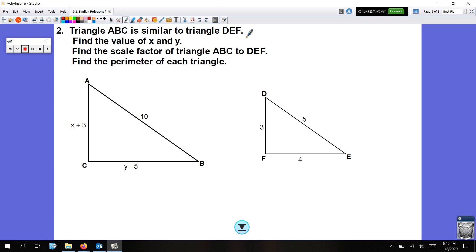Triangle ABC is similar to triangle DEF. We're going to find the values of X and Y, find the scale factor of triangle ABC to DEF, and find the perimeter of each triangle. First off, let's start with the scale factor because that's really the first thing we want to find. I see that AB has a value of 10, there's no variable here, and that's what I need. And I see DE has a value of 5. For the scale factor, if I put AB over DE, that is 10 over 5, which is 2 over 1. That is the scale factor.